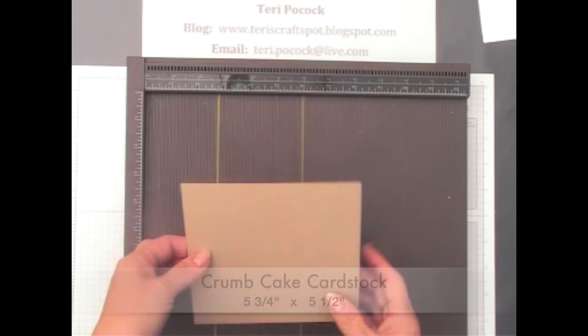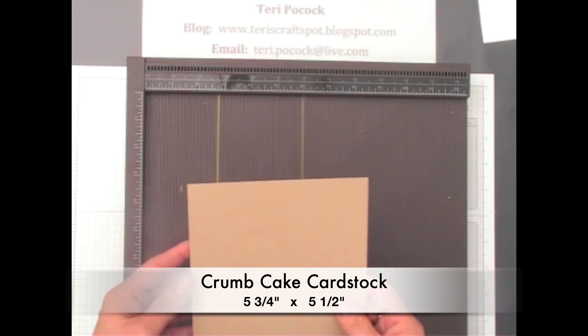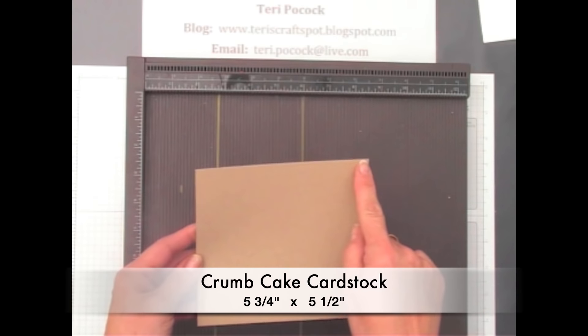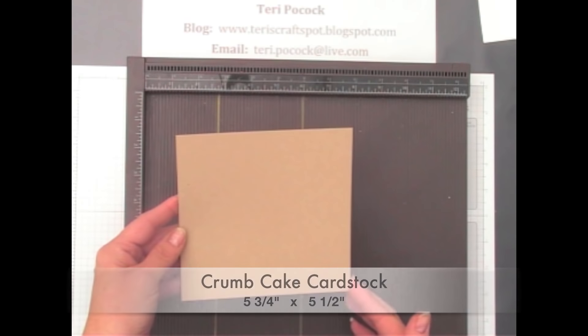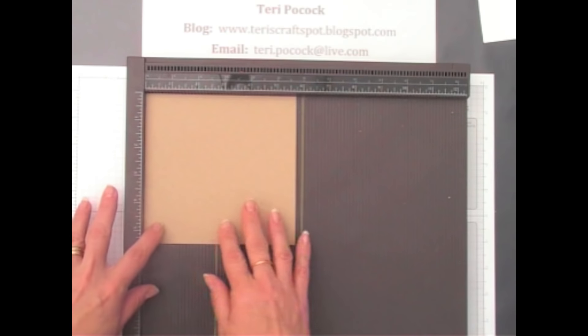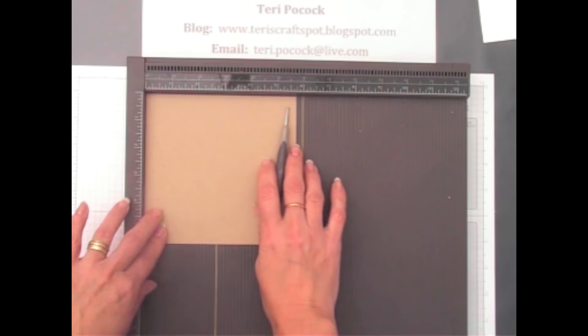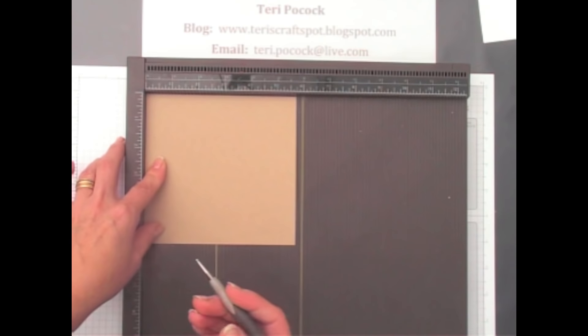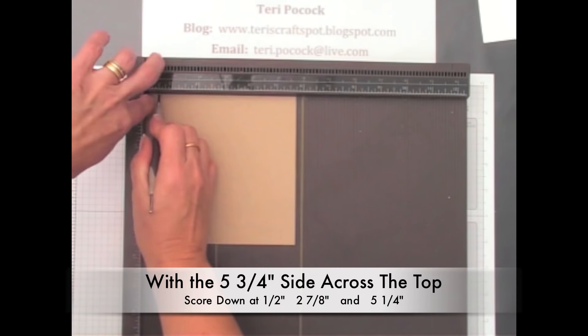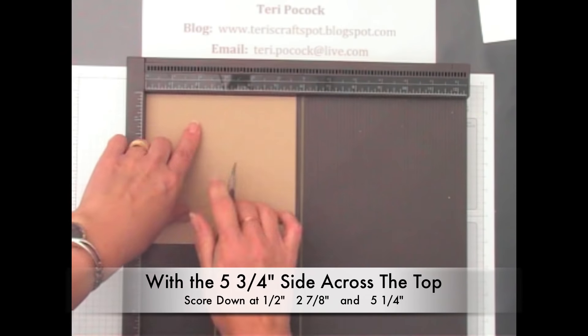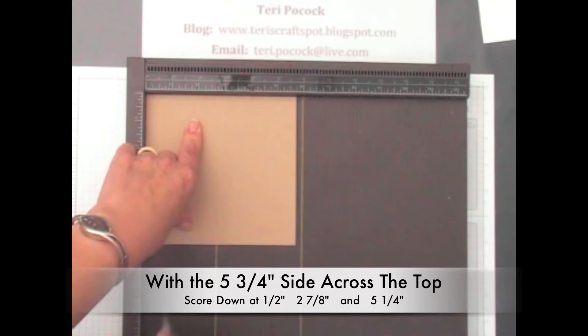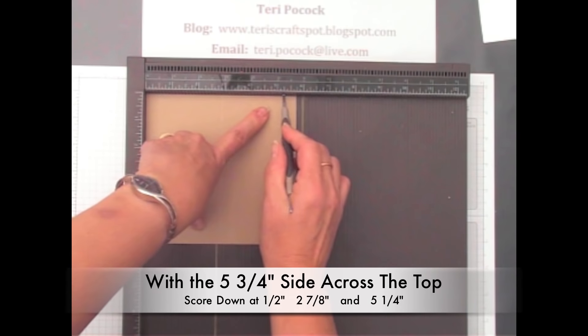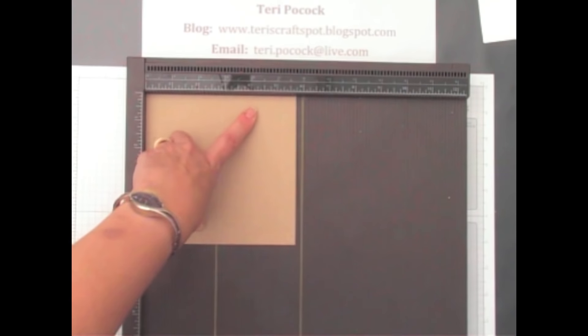To start off you need a piece of crumb cake cardstock. This measures 5 3/4 inches by 5 1/2 inches and you place that in your scoreboard so the longer side is running across the top, the 5 3/4 inch side, and you want to score down a half inch, 2 7/8 inches, and also 5 1/4 inches.